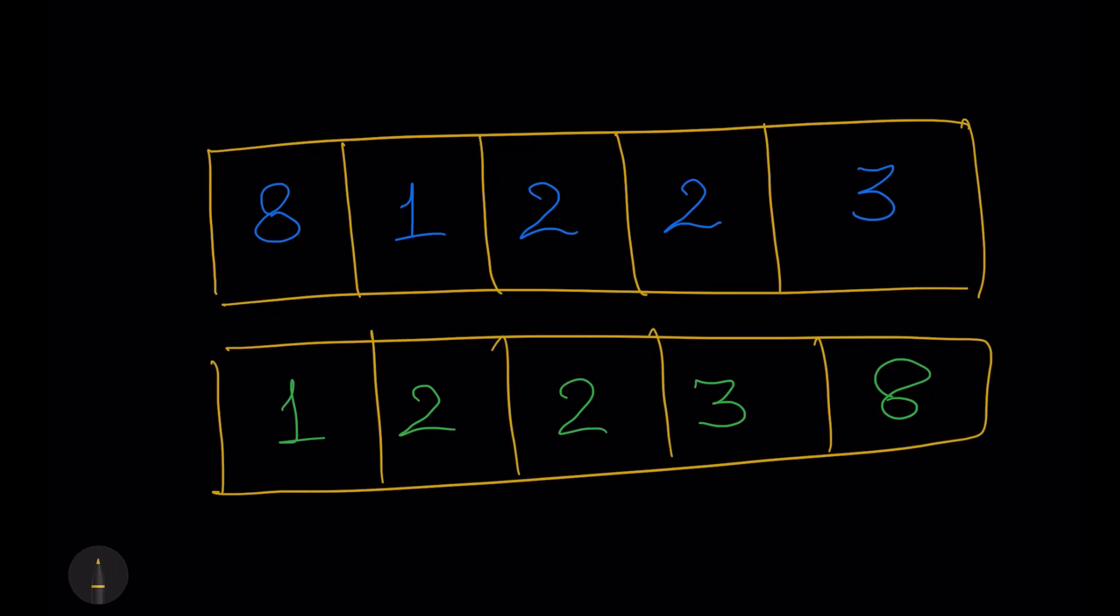we can simply know with the index of this particular number, or any number that there are four values smaller than this particular number, three values smaller than this number. Now in the case when the values are equal, we need to take special things into consideration.